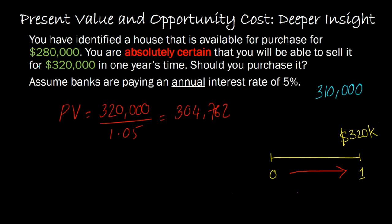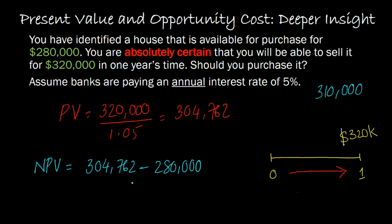In fact, for that reason, we said that this house is a good investment, or the net present value of this house is positive, because what you're willing to spend — which is 304,762 — minus what you are actually spending — which is $280,000 — is greater than zero. It's a positive NPV investment. You should make this investment.